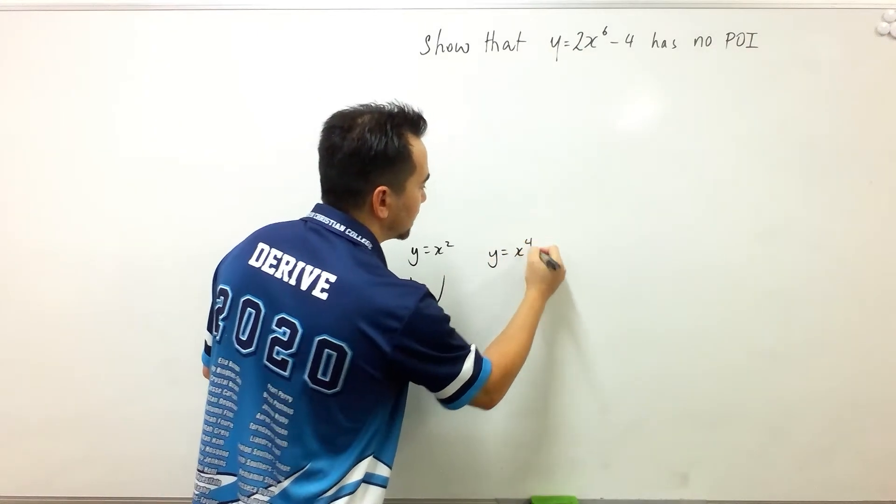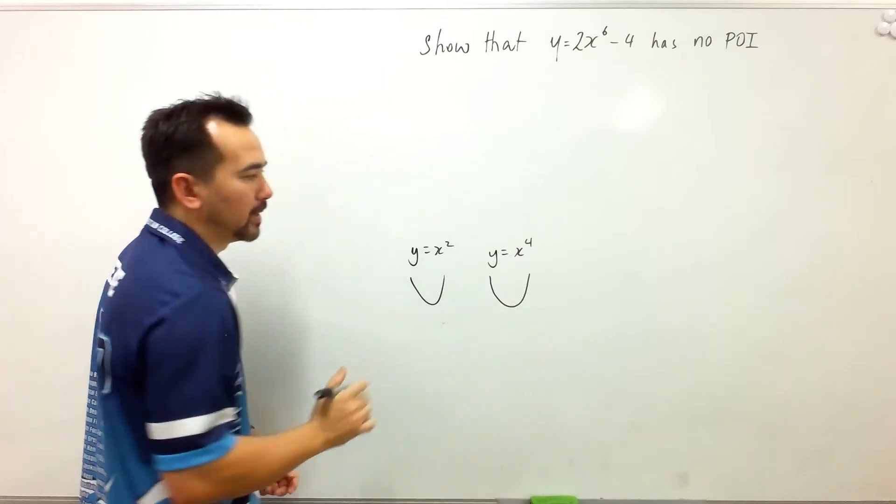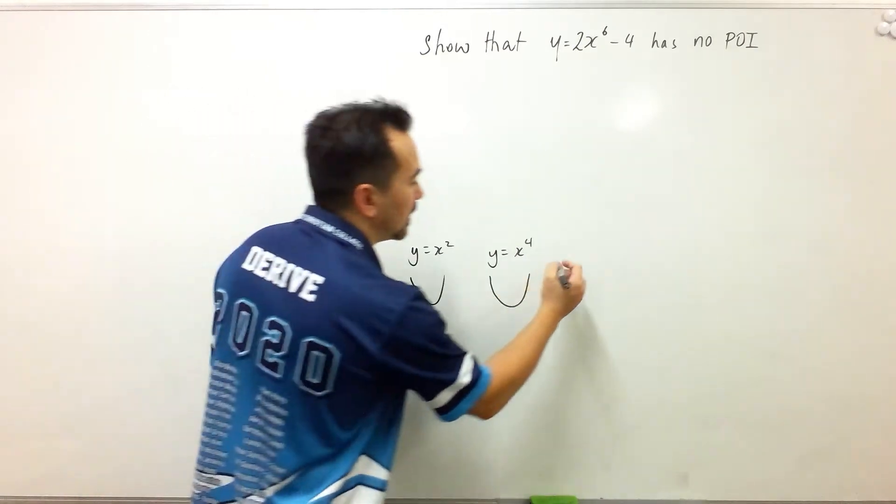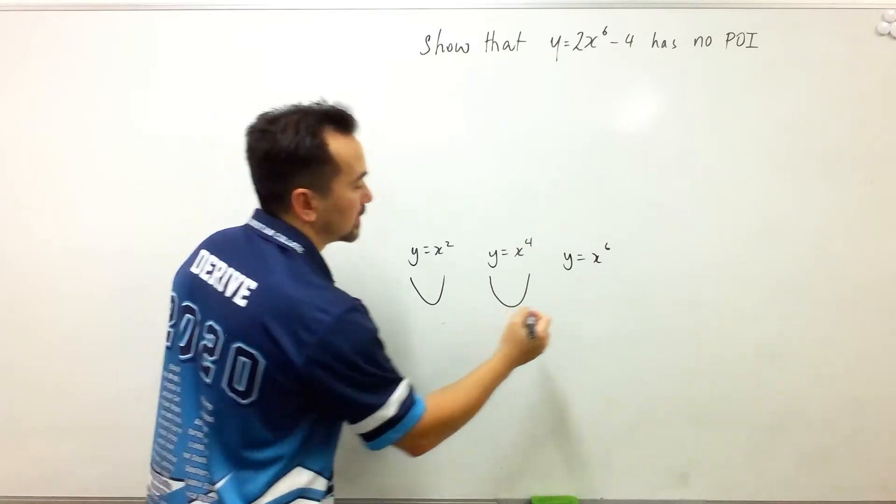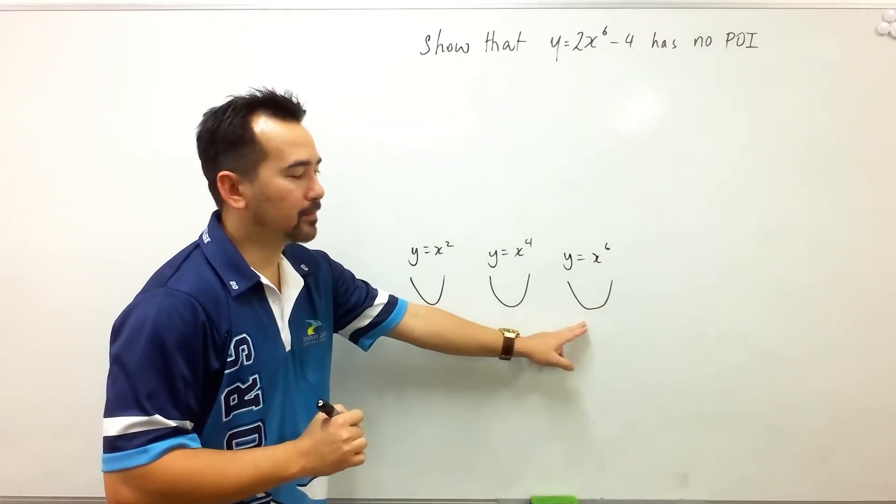The parent function of x to the power 4 looks like a quadratic but with a flatter base, also no point of inflection. And in this case, x to the power 6 will be very similar, and that has a flatter base again.